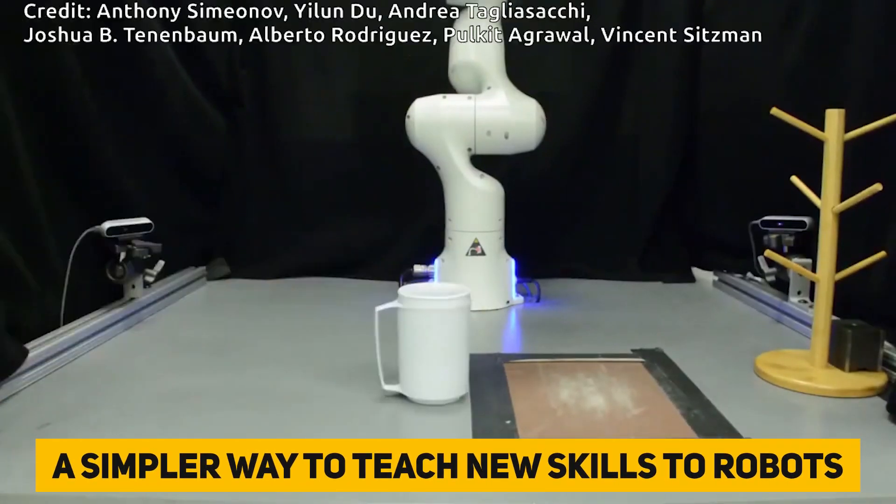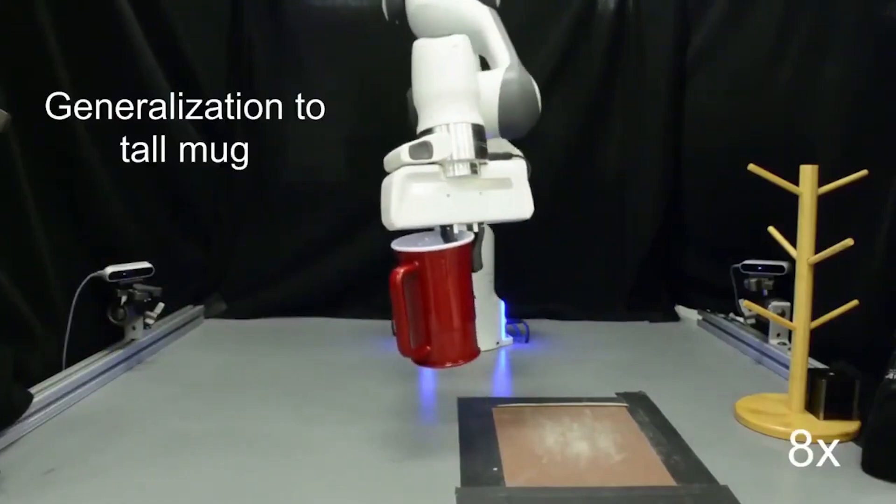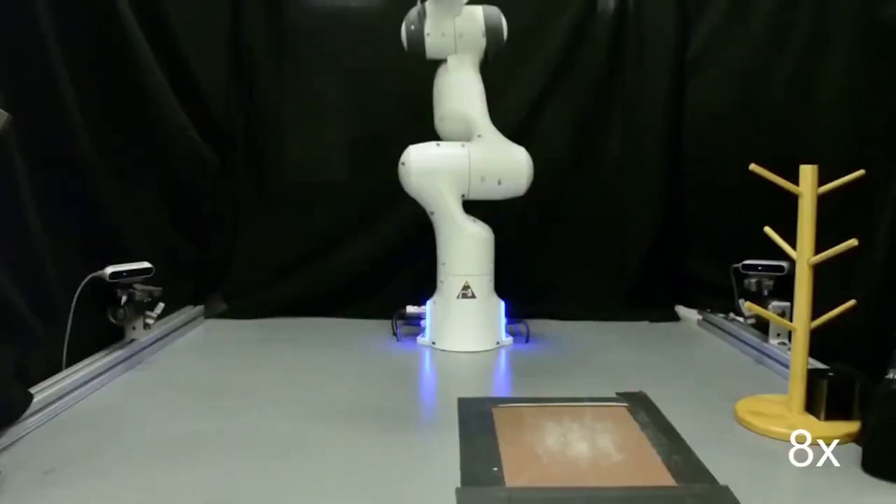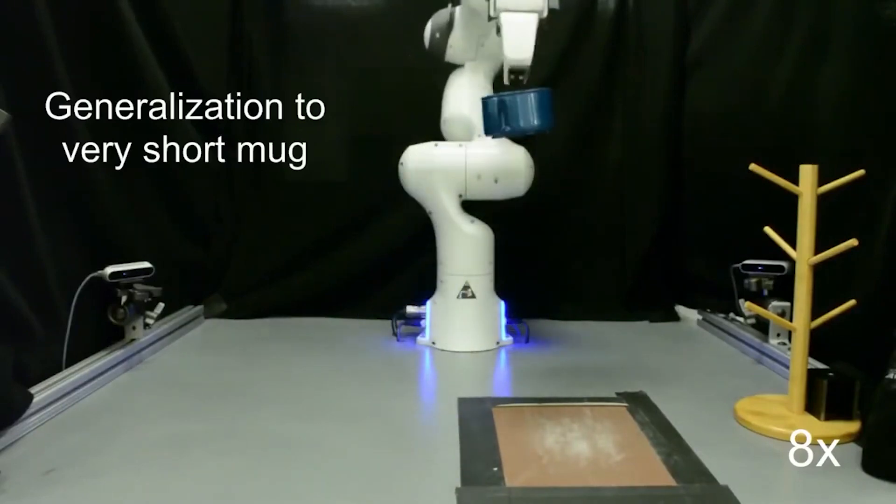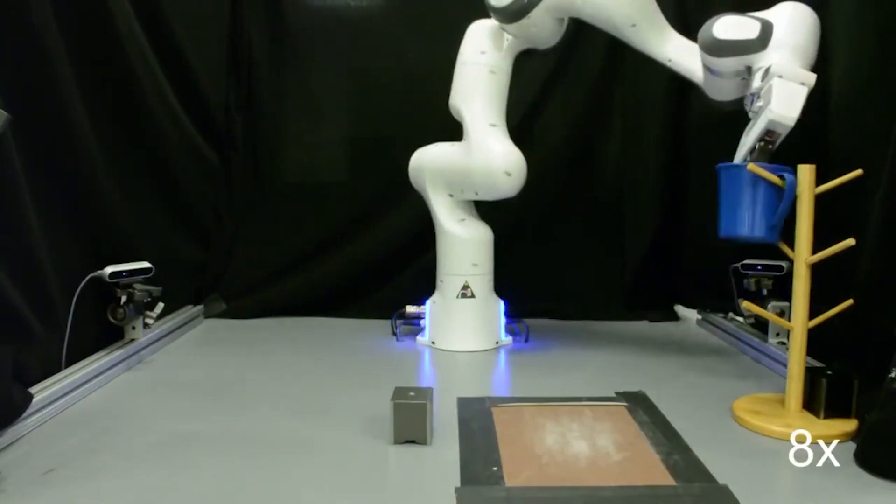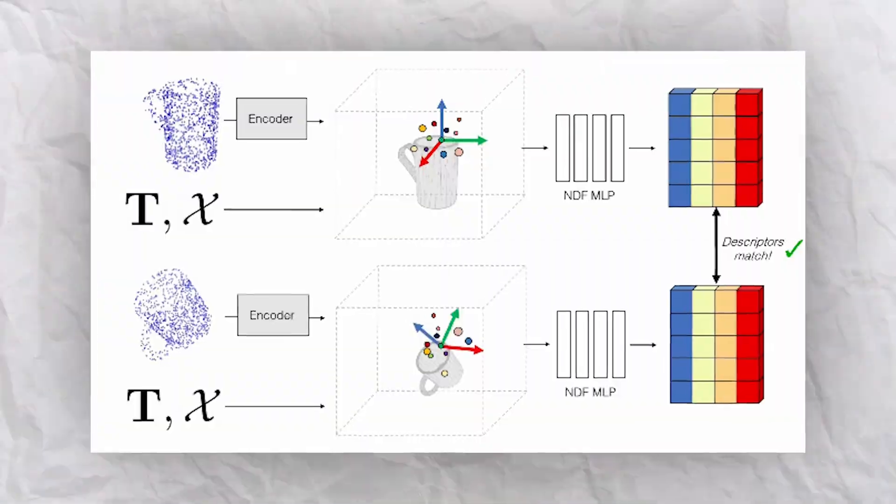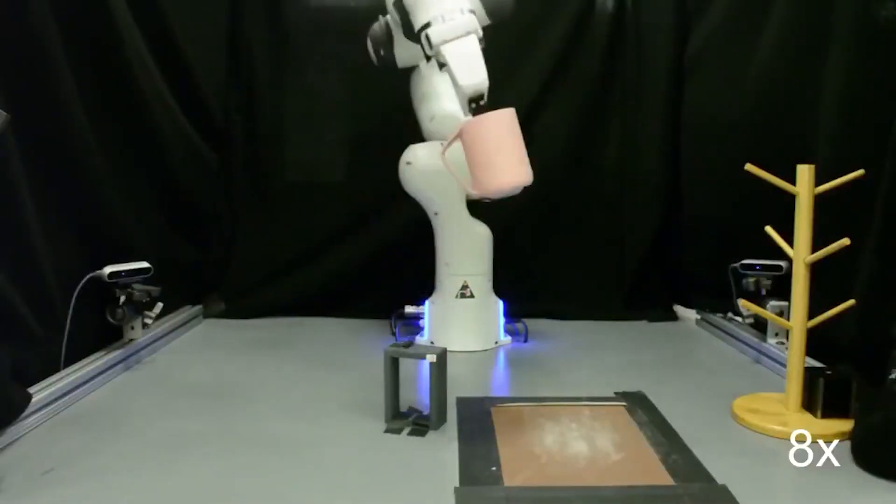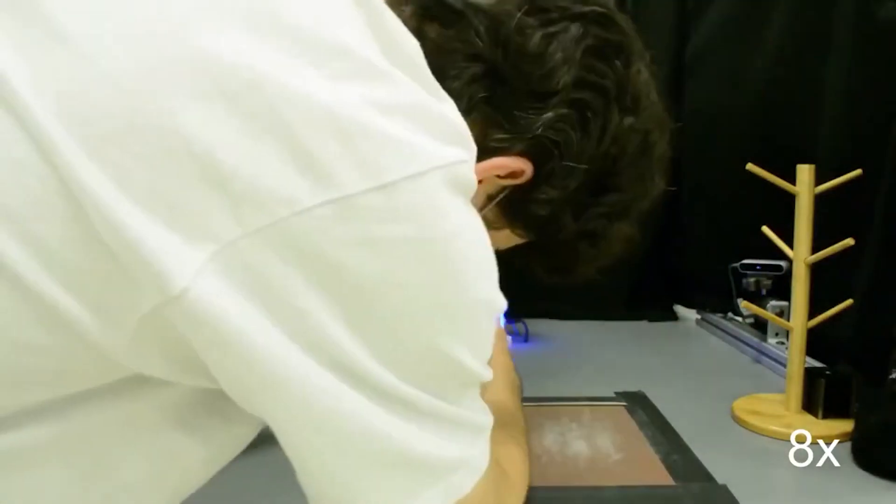A simpler way to teach new skills to robots. Researchers at the Massachusetts Institute of Technology have devised a machine learning system that allows robots to learn new skills using only a few human examples. Within 15 minutes, the approach allows a robot to pick up and position objects in never-before-seen random poses. A neural descriptor field neural network reconstructs the three-dimensional geometry of things and uses that knowledge to understand new objects similar to those seen in demonstrations.